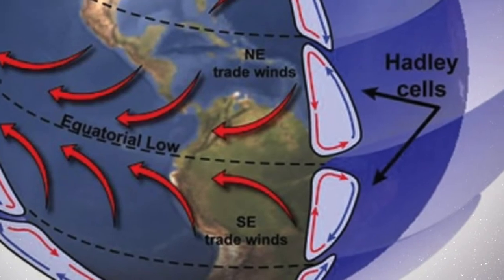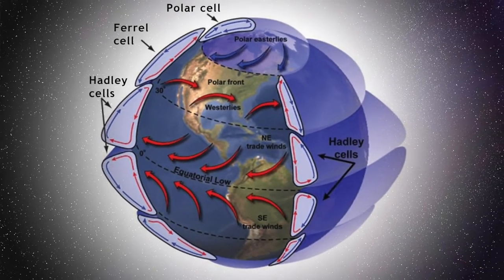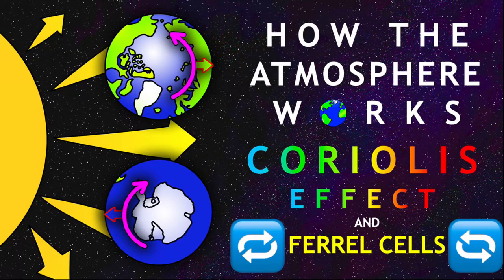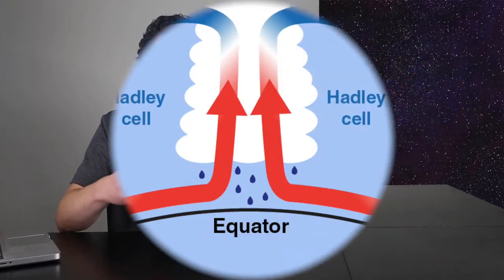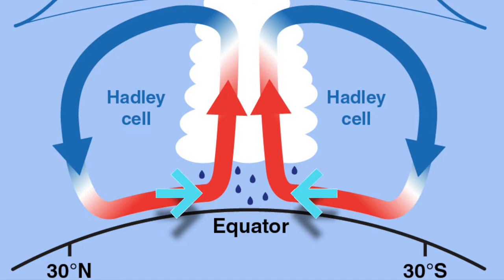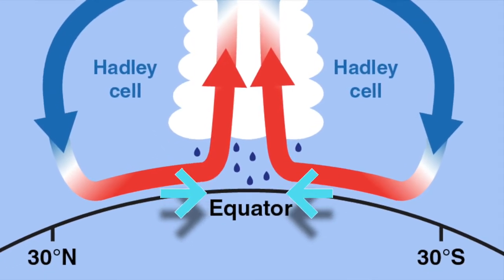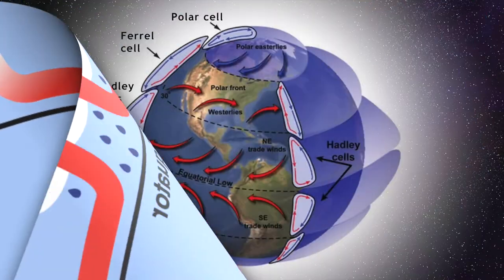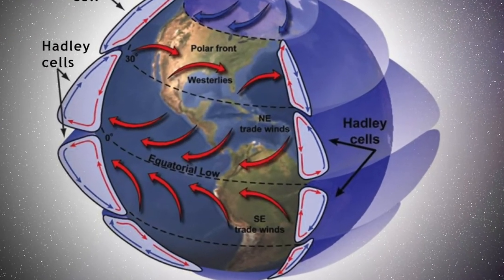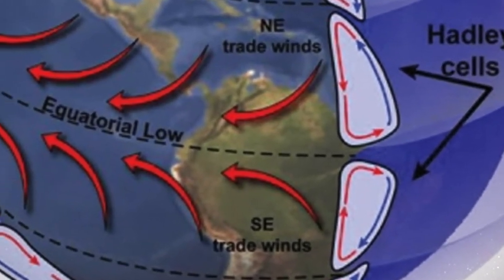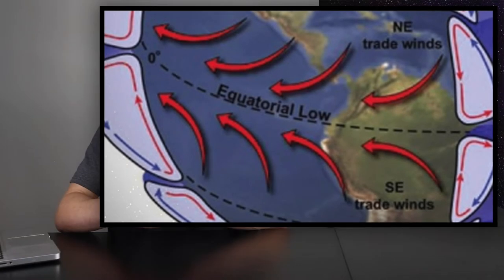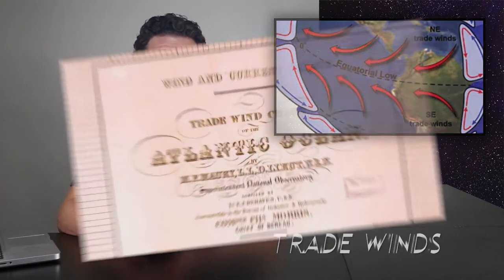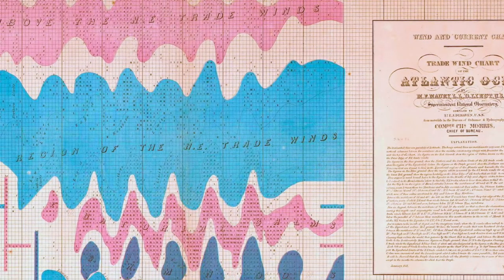The trade winds are formed as a result of the combination of Hadley cell circulation and the Coriolis effect, which you can learn more about by checking out the full 'How the Atmosphere Works' playlist linked below. Due to the convergence of the lower limbs of the Hadley cells, this equatorward flow of air results in winds that are in turn affected by Earth's rotation. This effect, known as the Coriolis effect, causes these winds to veer away from the equator towards the west. These westward-flowing winds are also referred to as easterly winds since they originate in the east, but they have come to be known as the trade winds due to having been the driving force behind the early trade routes across the Atlantic.